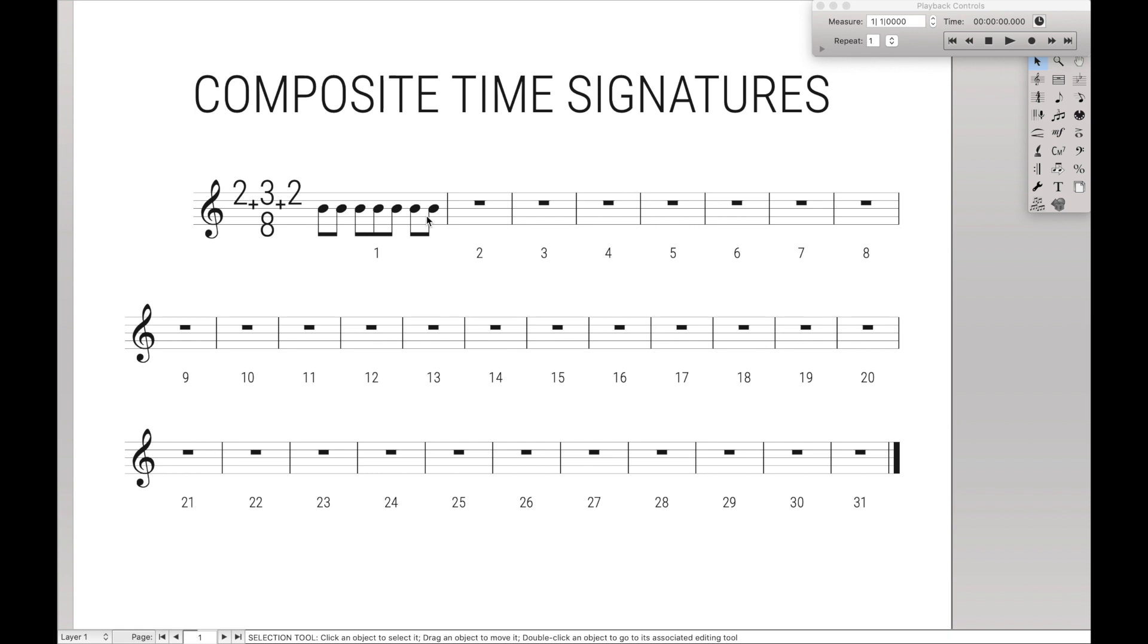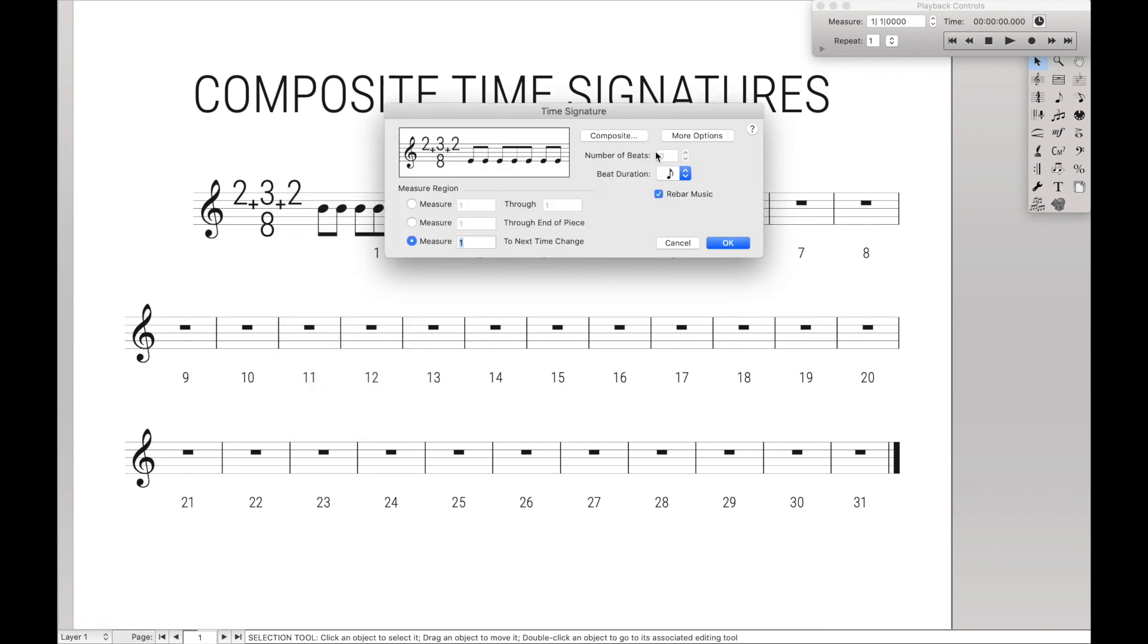But of course, we might just want to have it be shown as a 7-8 over here and not displayed as this ugly composite time signature. So what do we do? We come over here, come back to the edit time signature, and we're going to deal with more options over here.